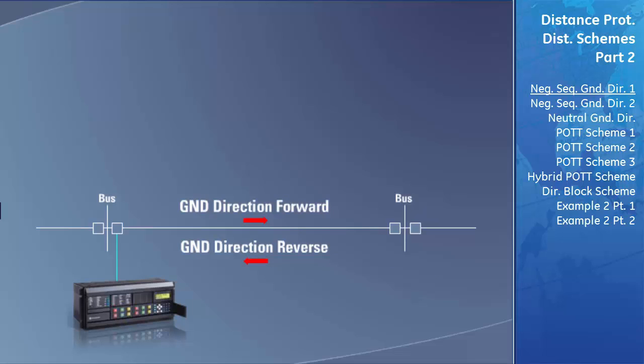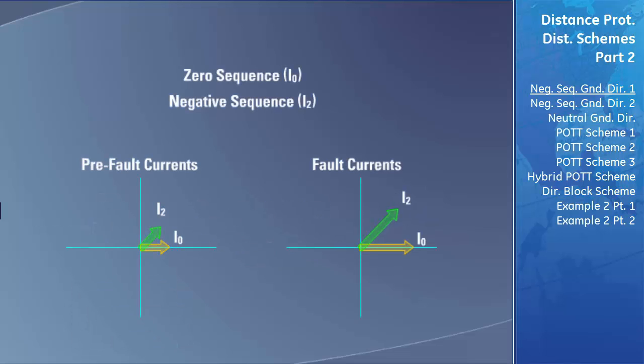The ground-directional overcurrent elements are used by pilot-aided schemes because they are sometimes more sensitive to detecting faults than the distance elements when the source has a weak infeed or high system impedance ratio. The benefits of using ground-directional functions in pilot schemes are that the zero-sequence and negative-sequence currents used to detect the direction of ground currents do not contain very many load components. Therefore, the pickup levels for the ground-directional elements can be set very low and are very sensitive.